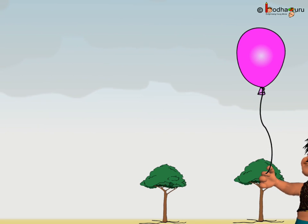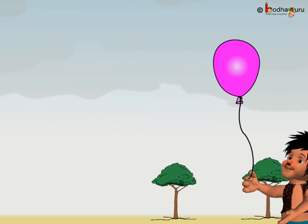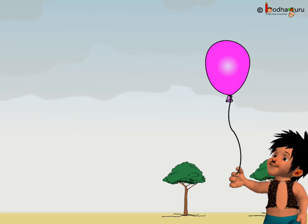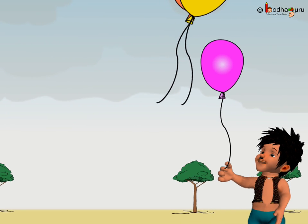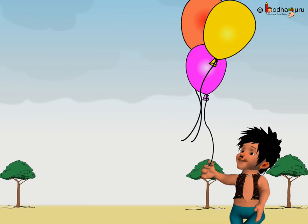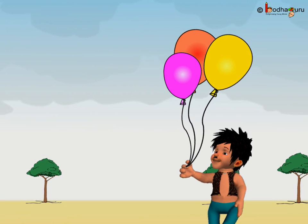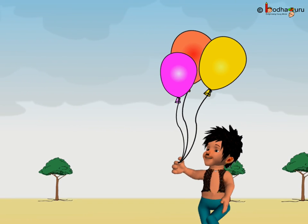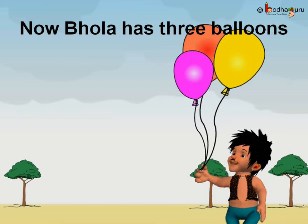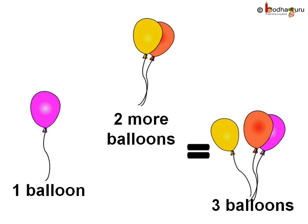You know, Bola also loves to play with balloons. So Bola had one balloon and he got two more balloons. Let's count how many balloons Bola has now — one, two, three. Yes, he has three balloons. So one balloon and two balloons is equal to three balloons.